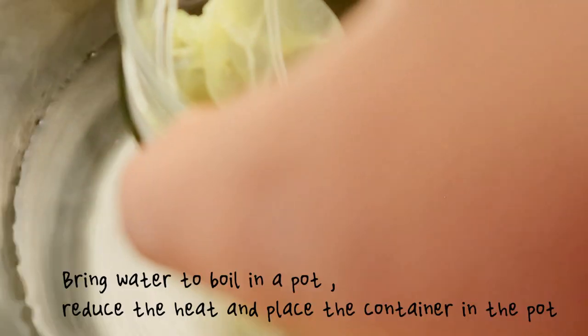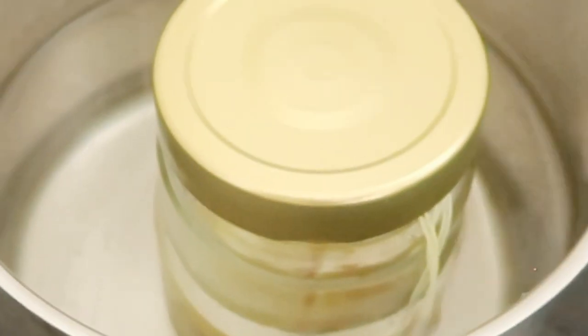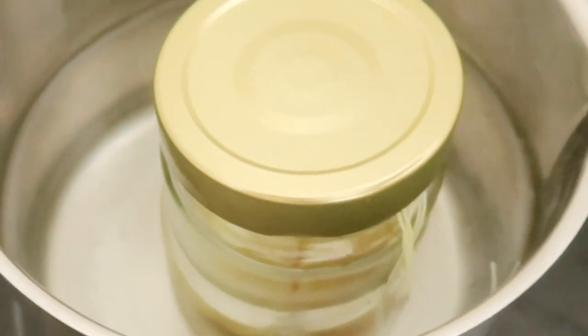Now put water into a pot and bring to boil. Turn the heat setting to low after the water has boiled so that the water will retain its temperature. Now put the jar containing the turmeric into the pot and wait for it to infuse into the oil. This takes about two hours.